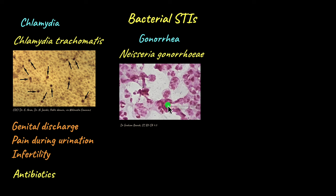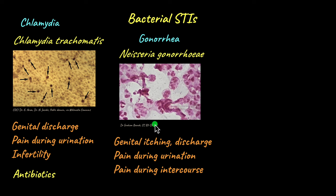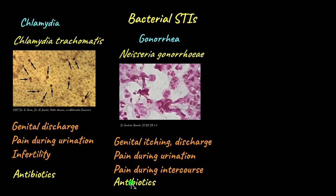Neisseria gonorrhoeae usually lives in the mucous membranes of the urethra, vagina, mouth, and eyes. Primary symptoms occur two to five days after infection and include swollen urethra and testicles in men and lower abdominal pain in women. Most don't show symptoms initially, but as the infection progresses, symptoms like genital itching, discharge, pain during urination, and pain during intercourse can appear. Gonorrhea can also be treated with antibiotics.